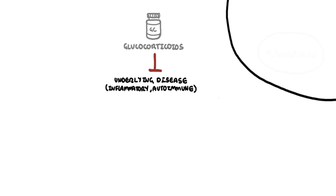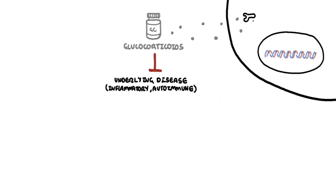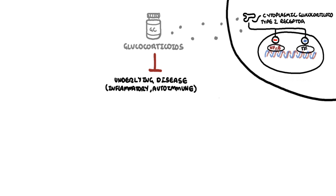Glucocorticoids exert their effects on gene expression via cytoplasmic glucocorticoid type 2 receptors. Binding of glucocorticoids to its receptors stimulates gene expression, which will ultimately cause the effects of glucocorticoids on the body. Specifically related to bones, glucocorticoid receptors are found in all bone cells except for osteoclasts.